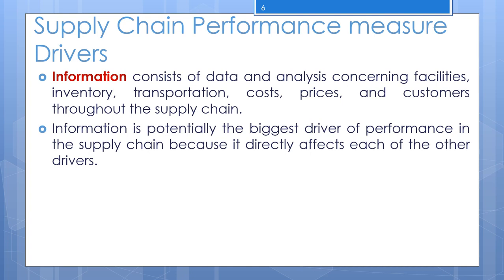There is one important term here: aggregate planning, which transforms forecasts into a plan of activity to satisfy projected demand. A key decision managers face is how to collaborate on aggregate planning throughout the entire supply chain. The aggregate plan becomes critical information to be shared across the supply chain because it affects both the demand on a firm's suppliers and the supply to its customers.